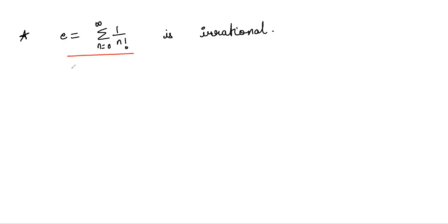The proof we are going to see in this video is by the method of contradiction. So we assume E to be rational, that is E equals P over Q where P and Q are positive integers.